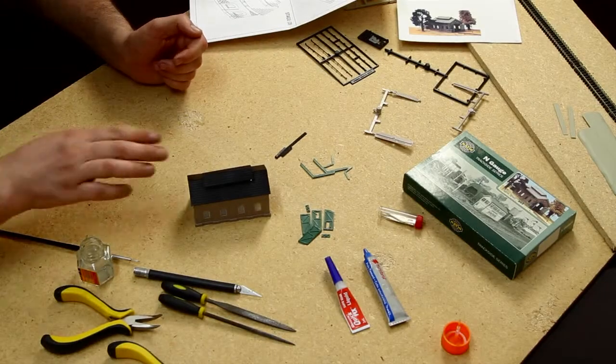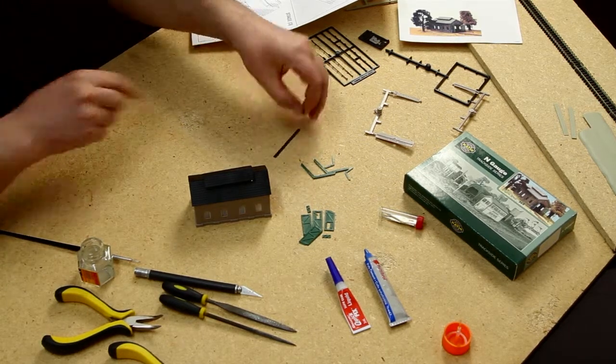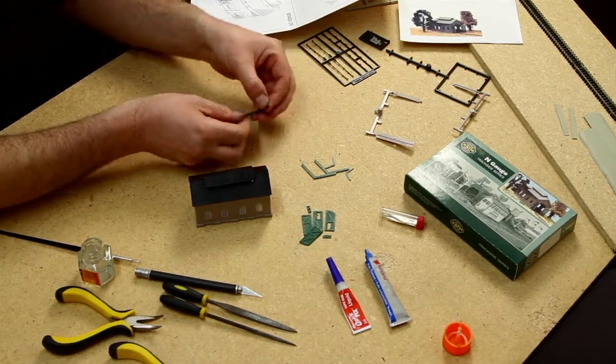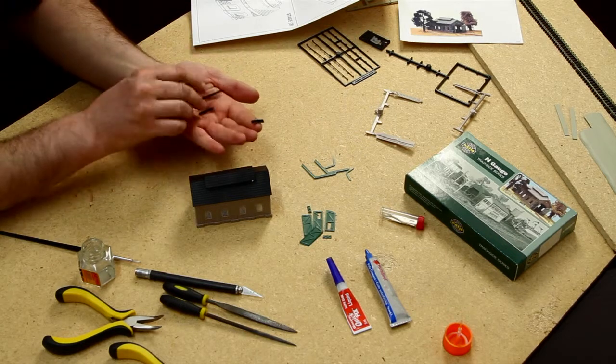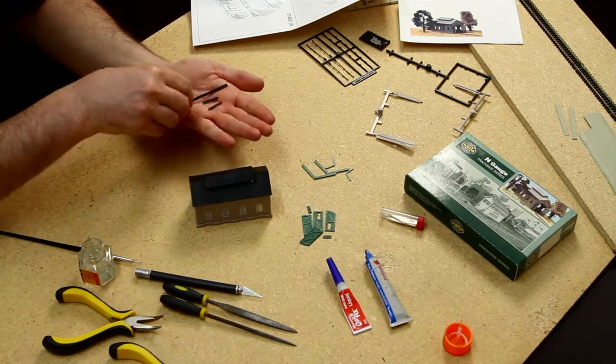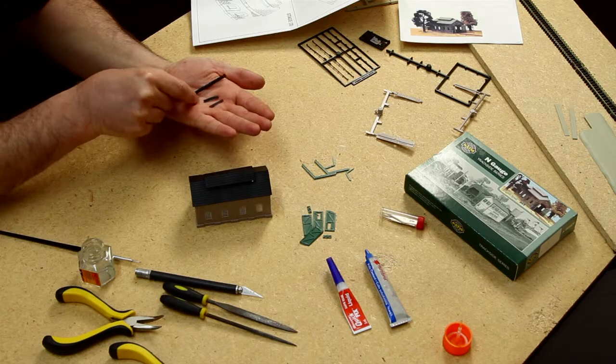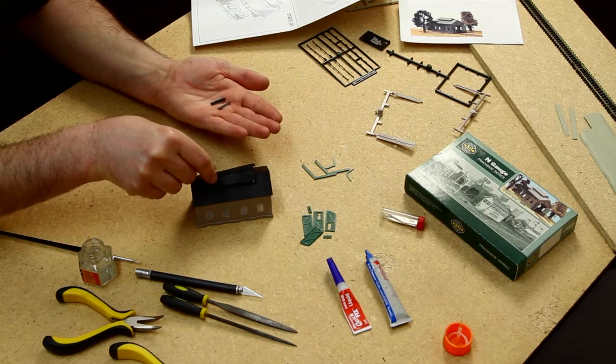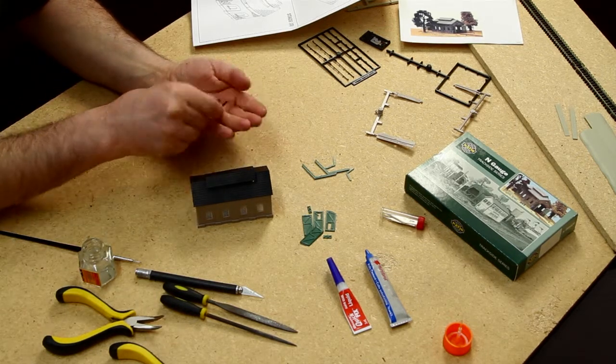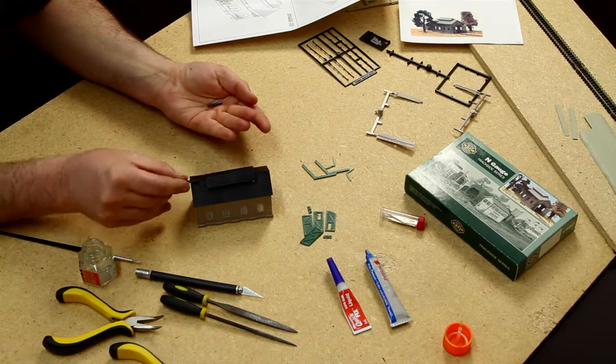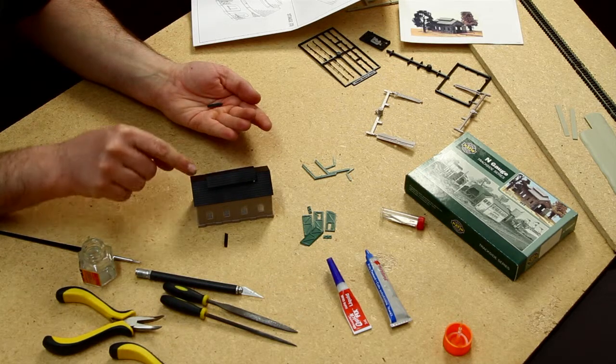Once your roof section is glued into place, you can add your three pieces of ridge capping. Now the long one goes up on top and the two short ones go at either end.